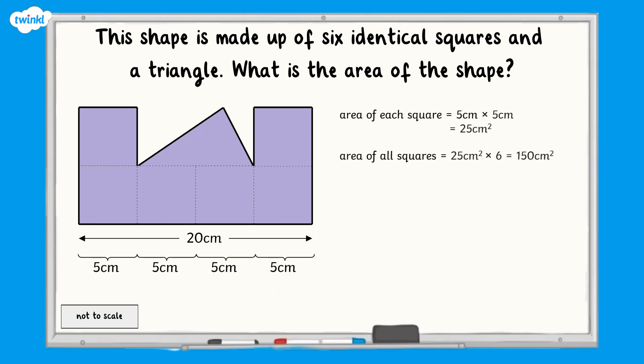The triangle has a base of 10 cm because it is equal to the length of 2 squares. The perpendicular height is 5 cm as it is the same height as one of the squares. This means the area of the triangle is half multiplied by 10 multiplied by 5, which equals 25 cm squared.